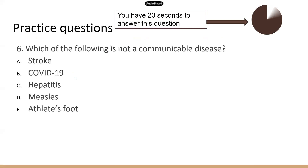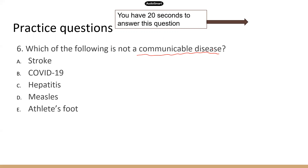Practice question: which of the following is not a communicable disease? To answer this, you have to know that communicable disease means an infectious disease. So which one is not infectious? That's stroke — everything else is infectious. Let's talk about the type of microorganism that causes each disease: COVID-19 is a virus; hepatitis is also a virus; measles is a virus; athlete's foot — that's a special one — is caused by a fungus. Hopefully you'll see some of those on the test.